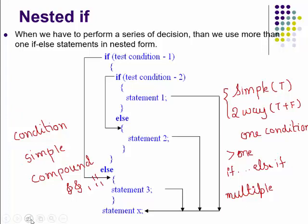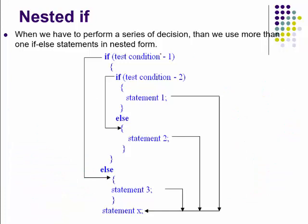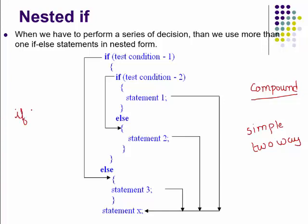The last form of the if statement is nested if. Nested if means if you have to perform a series of decisions, or if you have to execute a compound condition, you can use nested if. This means two or more conditions are related to one another. Nested if can be used in any of the forms discussed: simple if, two-way branching, or multiple branching. Nesting simply means that within the if statement's body, another if statement is written.